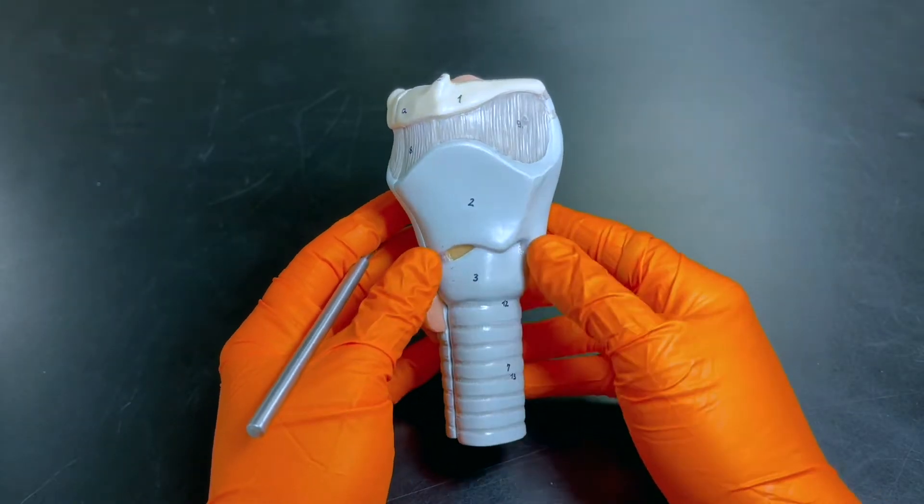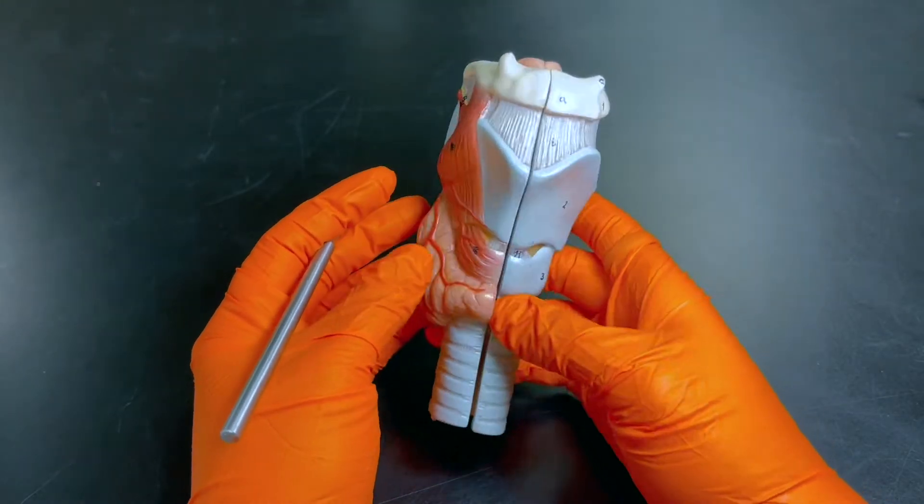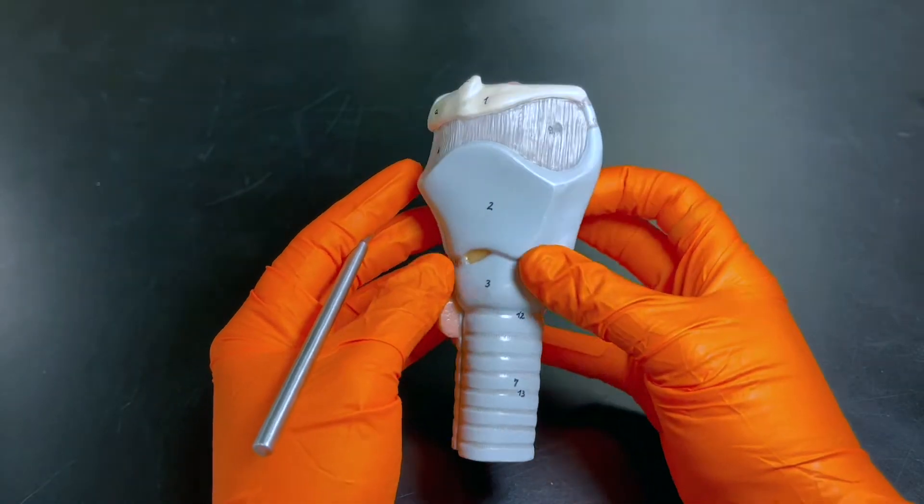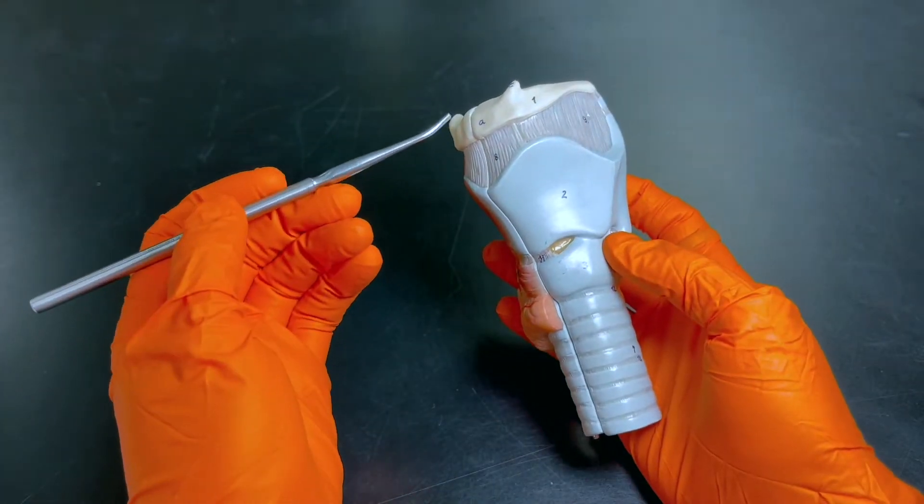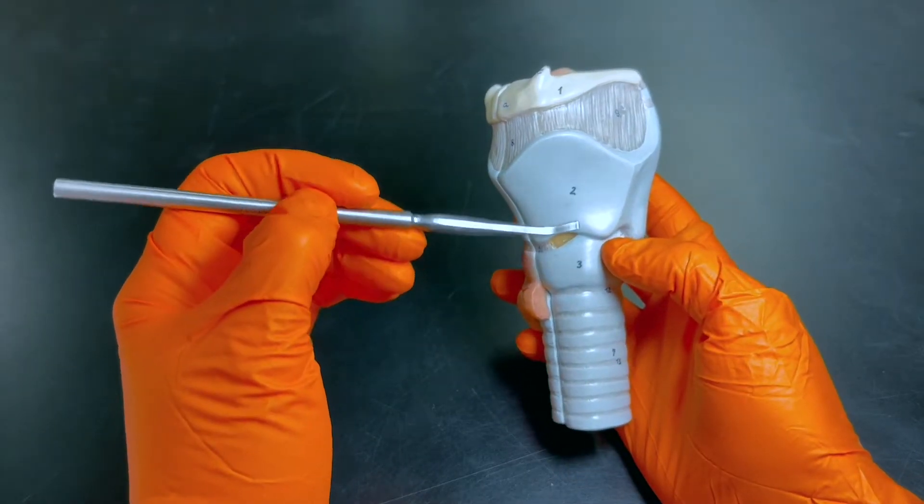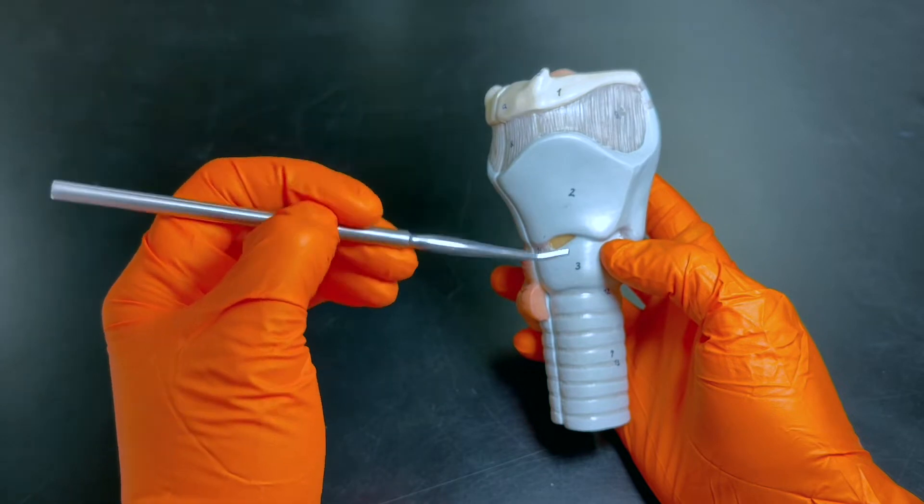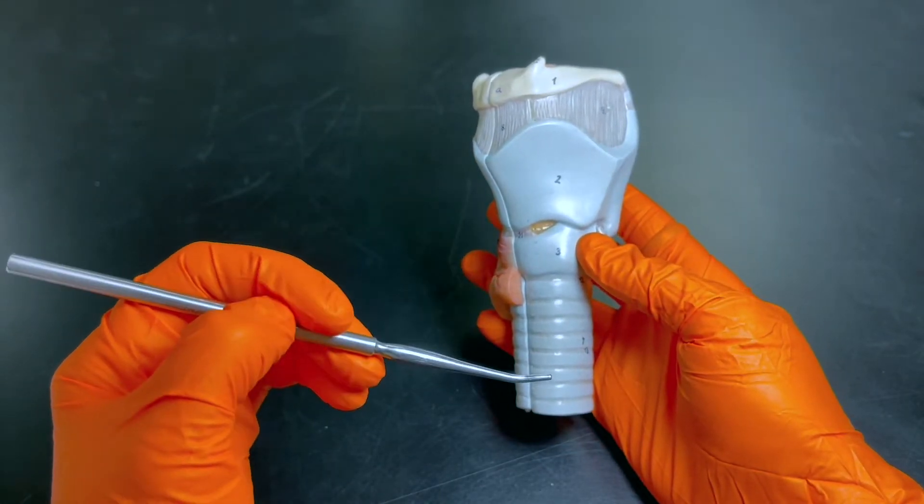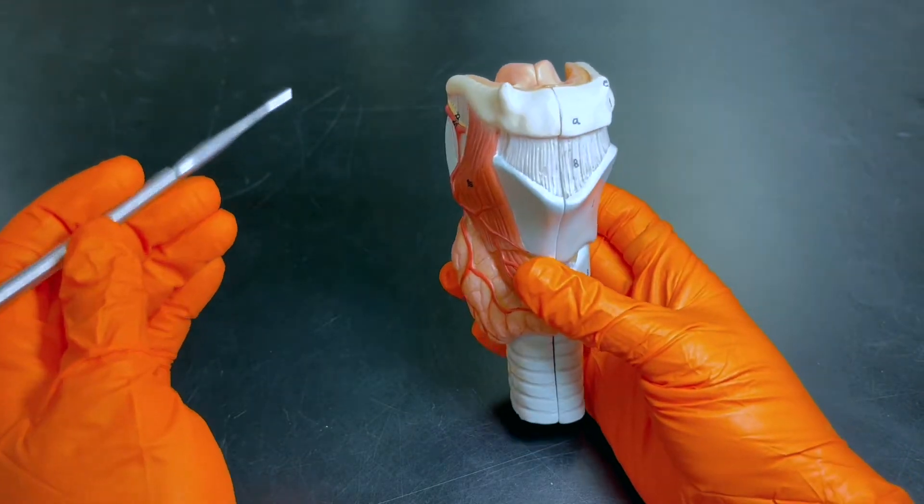All right, let's look at the lower respiratory tract. We have a few things to point out on this model. The first thing we'll start out with are features of the larynx, which will be this area right here, and then features of the trachea, which is this area right here.